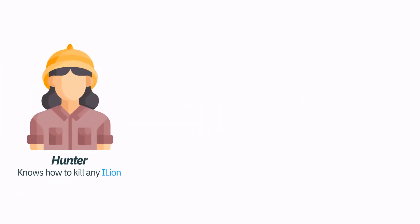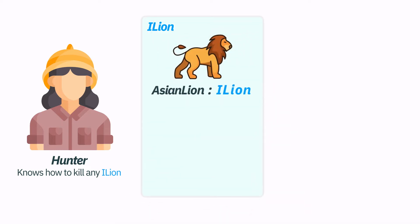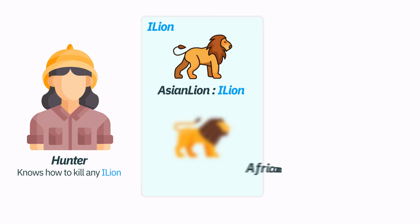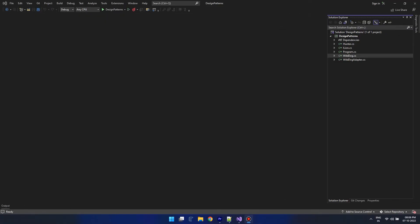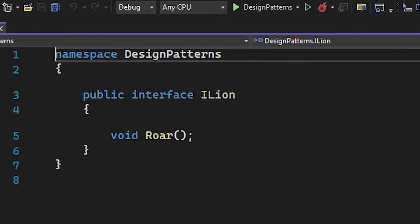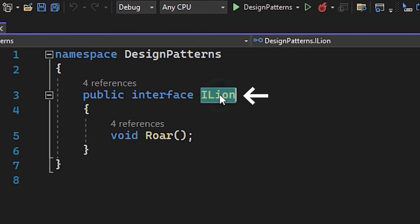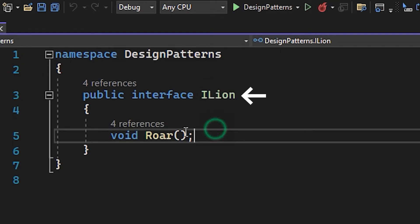Let's take one more example. This is Kate and she is a lion hunter. In software terms we define an interface ILion to represent all lions. Since Asiatic lions implement the ILion interface, she can hunt them. She can also hunt African lions because they are also lions and implement the ILion interface.